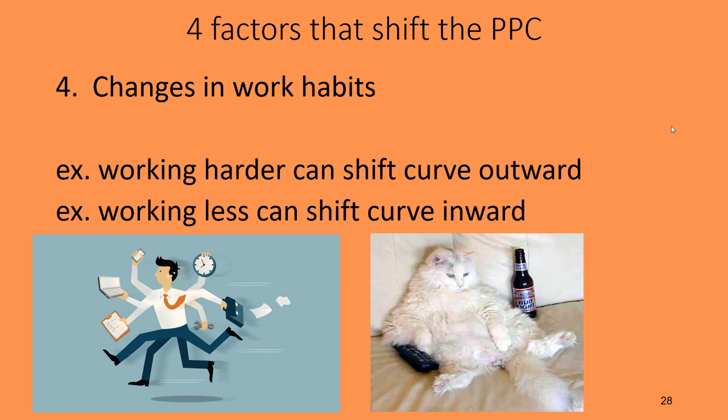Welcome back Highlanders to part three of chapter two in our Econ 2 class. Remember at the end of part two we finished up by talking about the four factors that shift the production possibilities curve: a change in resources, a change in technology, a change in the rules or laws under which an economy functions, and a change in work habits.